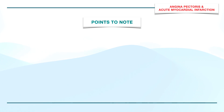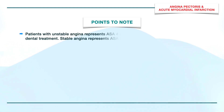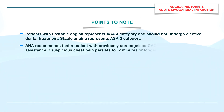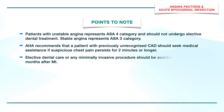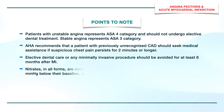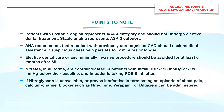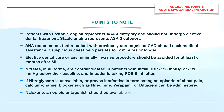Some important pointers to remember: Patients with unstable angina represent ASA-4 category and should not undergo elective dental treatment. The American Heart Association recommends that patients with previously unrecognized coronary artery disease seek medical assistance if suspicious chest pain persists for 2 minutes or longer. Elective dental care or minimally invasive procedures should be avoided for at least 6 months after an episode of acute MI. Nitrates in all forms are contraindicated in patients with initial systolic blood pressure less than 90 mmHg or less than 30 mmHg below their baseline, and in patients taking phosphodiesterase inhibitors. If nitroglycerin is unavailable or ineffective, calcium channel blockers such as nifedipine, verapamil, or diltiazem can be administered. Naloxone, an opioid antagonist, should be available whenever opioids are used.